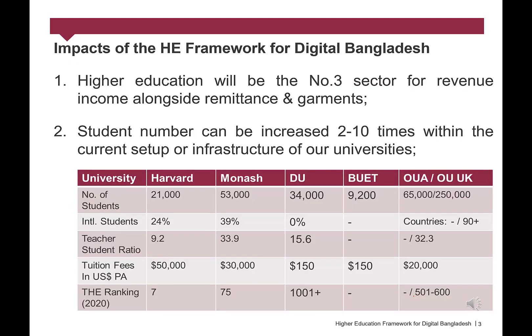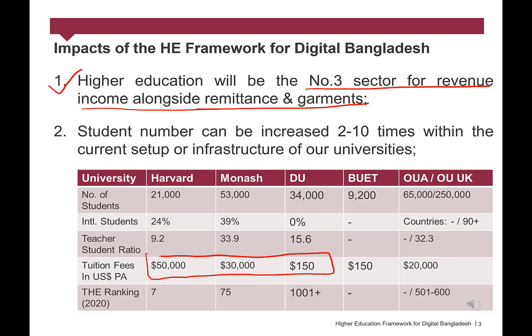Now let's see the impacts of the Higher Education Framework for Digital Bangladesh. Number 1: Higher Education will be the number 3 sector for revenue income alongside remittance and garments. It is the same concept as our garments products used in developed countries — lower cost and comparatively better quality. For instance, without accommodation and food, only tuition fees per year per student at Harvard University is around $50,000, at Australian universities it is more than $30,000, and in Bangladesh it is only $150 per year for local students at public universities and around $2,000 at private universities.